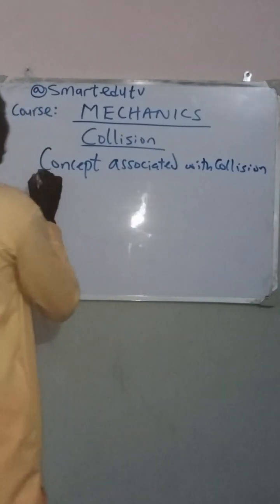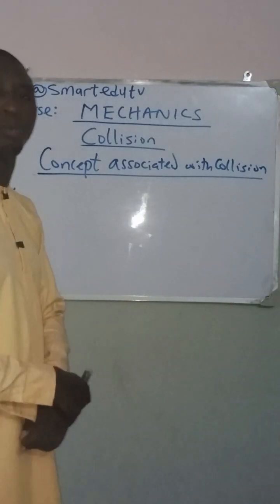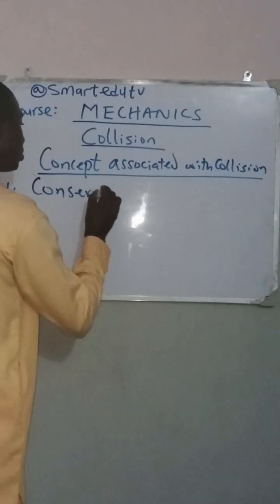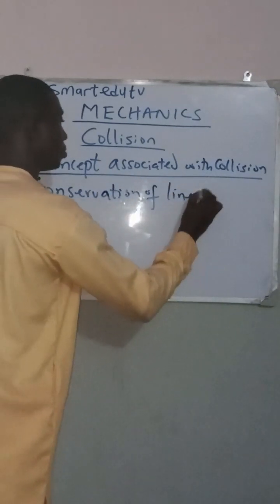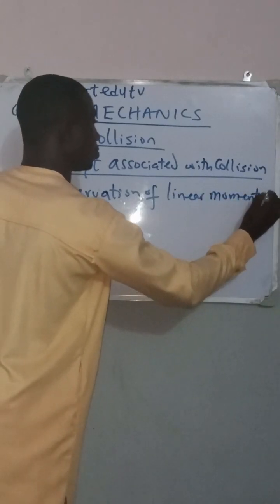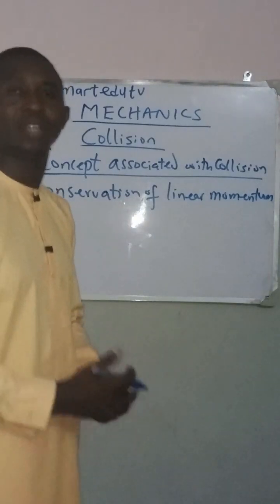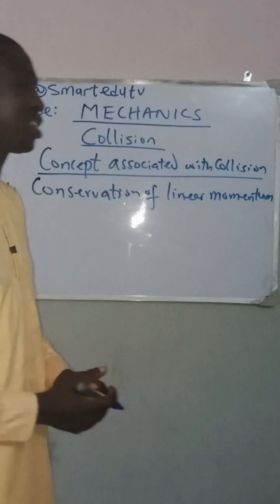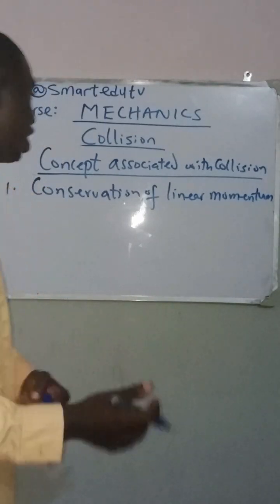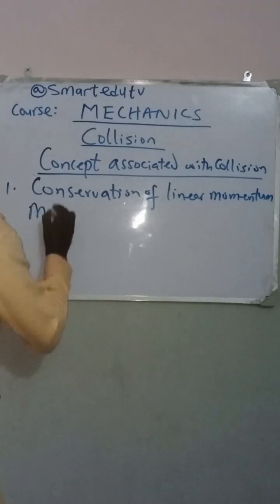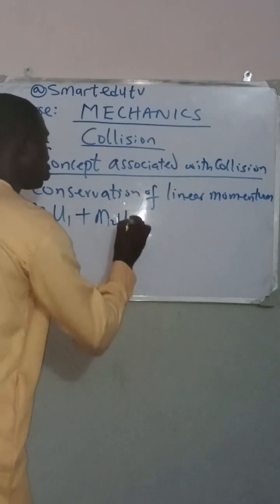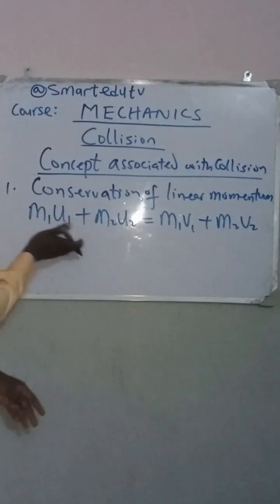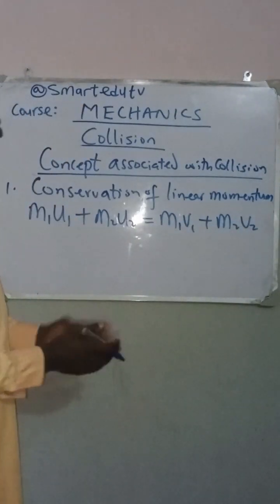The first concept we are going to be looking at is the conservation of linear momentum. This means the momentum before collision is equal to the momentum after collision. Mathematically, it can be expressed as: M1U1 + M2U2 = M1V1 + M2V2. That is what we mean by conservation of linear momentum.